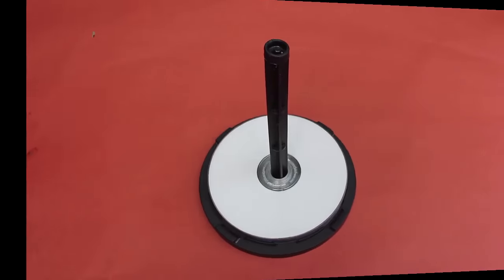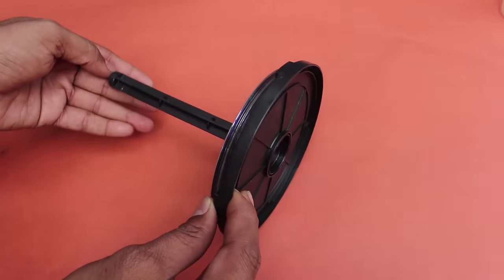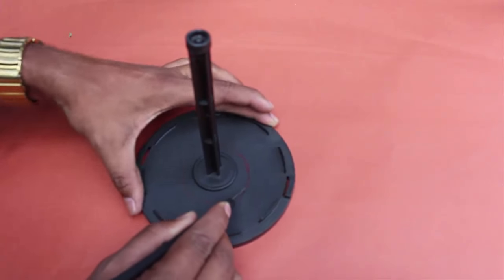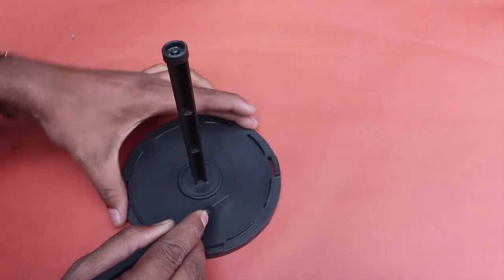Screw the lid with a valve on the bottle mouth. Cut the circular base of the CD DVD stand to fit the inside of the bottle.